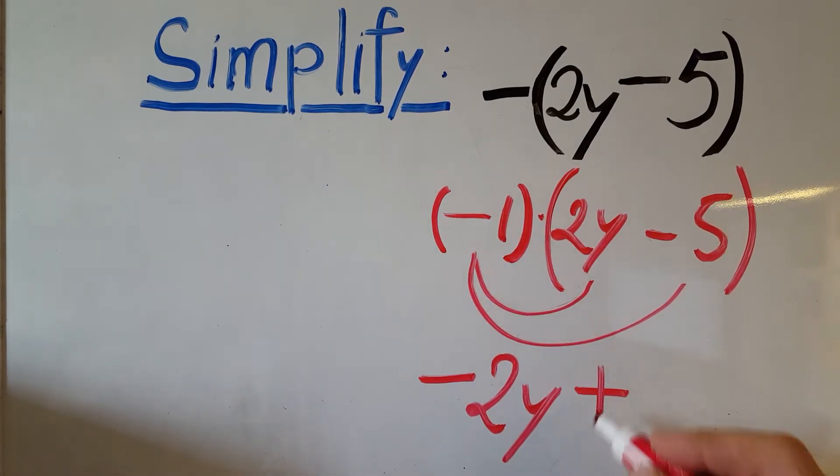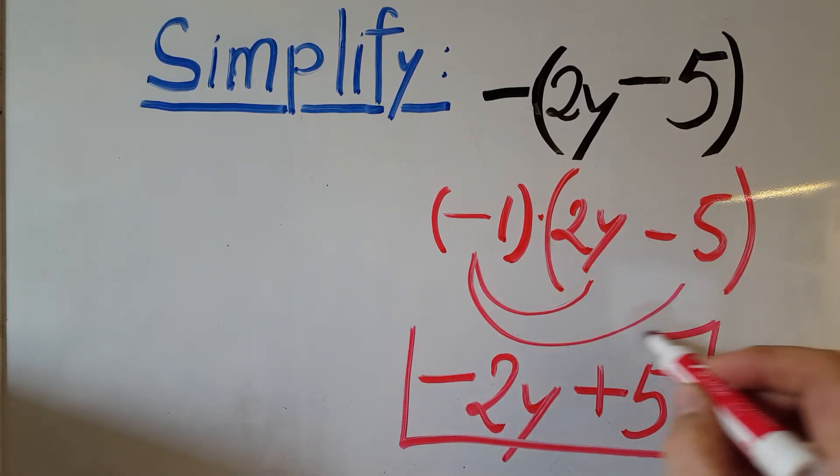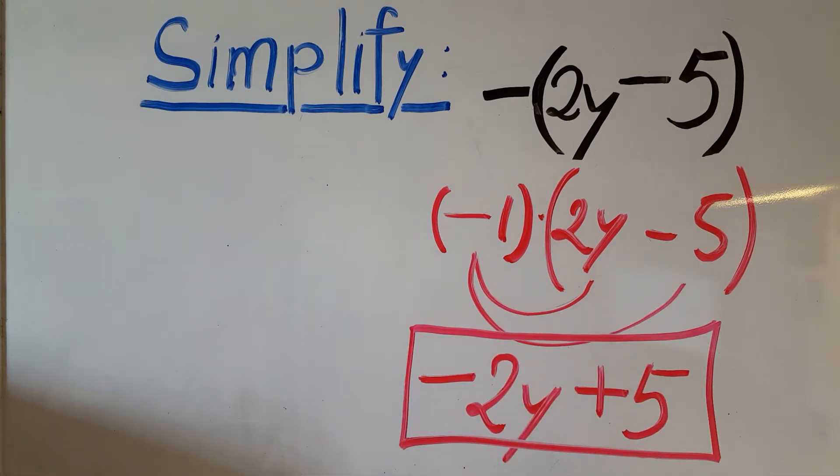So we're gonna have 1 times 5, a 5. And there you go, this is our result.